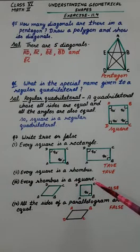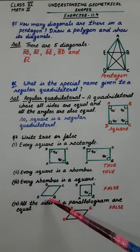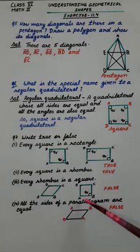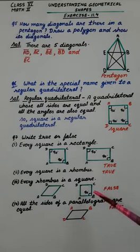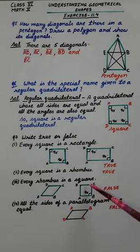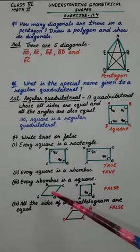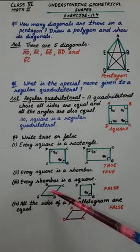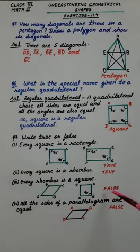Third one: every rhombus is a square. This is a rhombus where all four sides are equal, and this is a square where all four sides are also equal. But in a square each angle is 90 degrees, which is not the case in a rhombus. So every rhombus is a square — no, it is false.